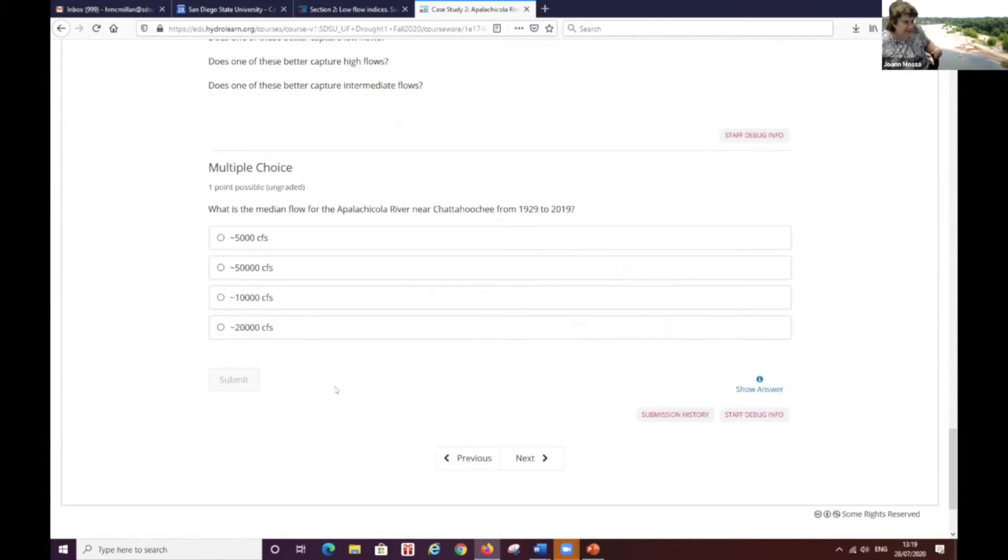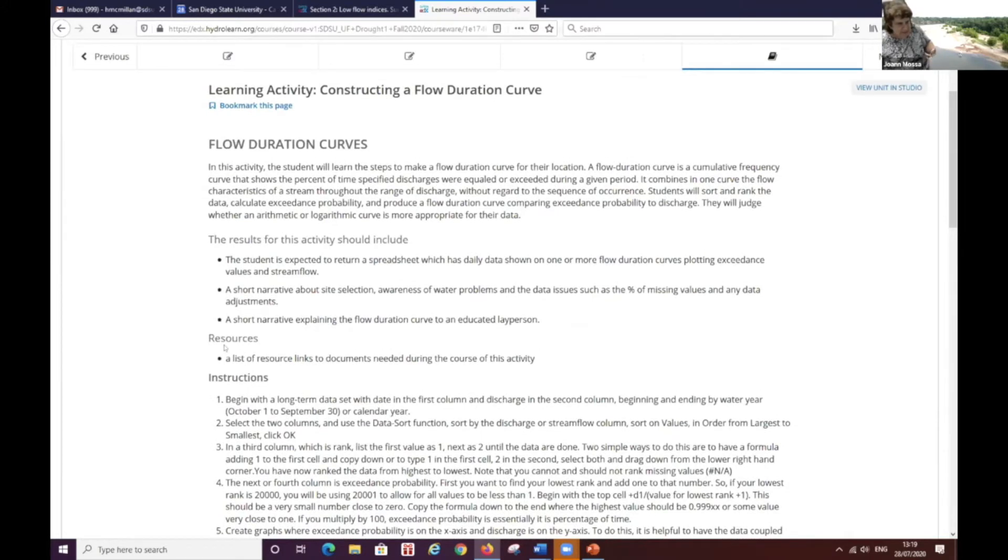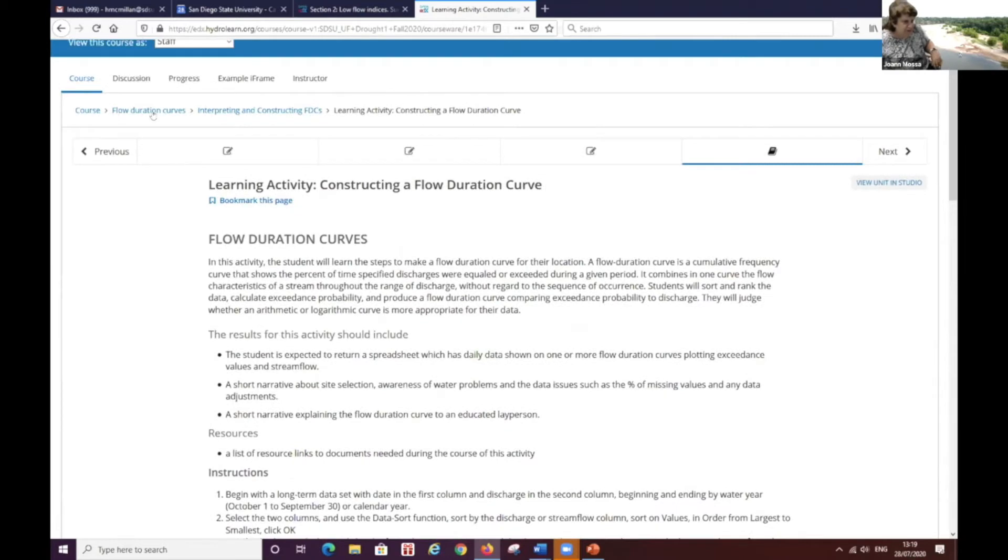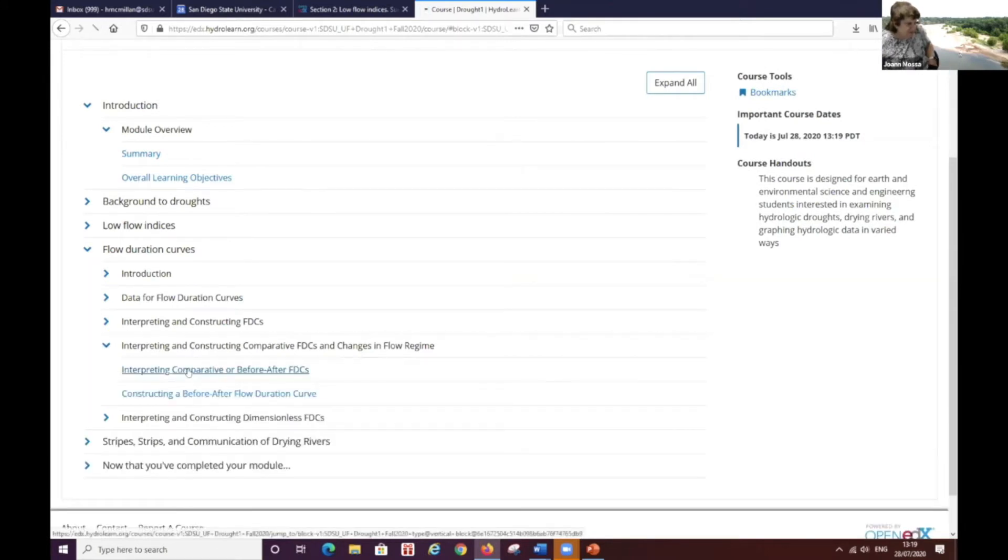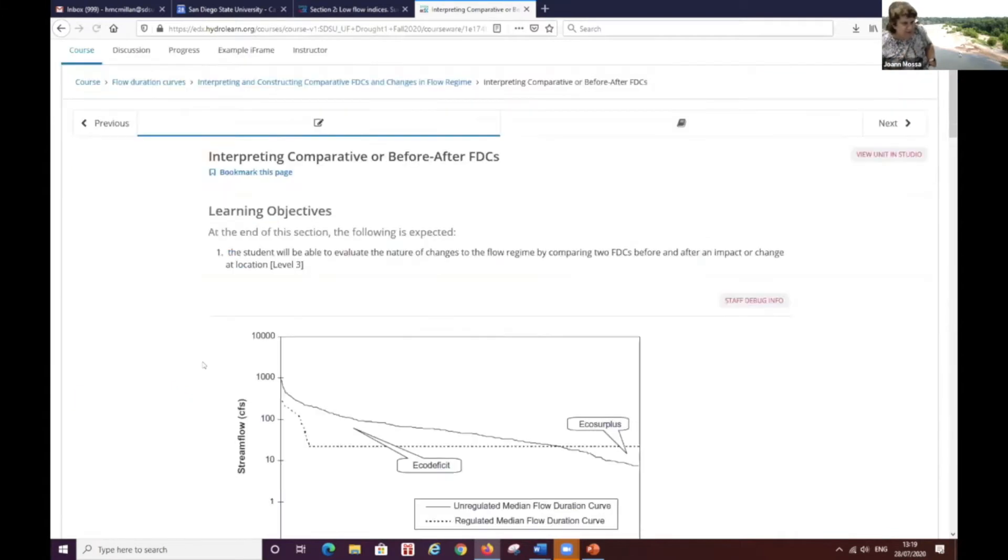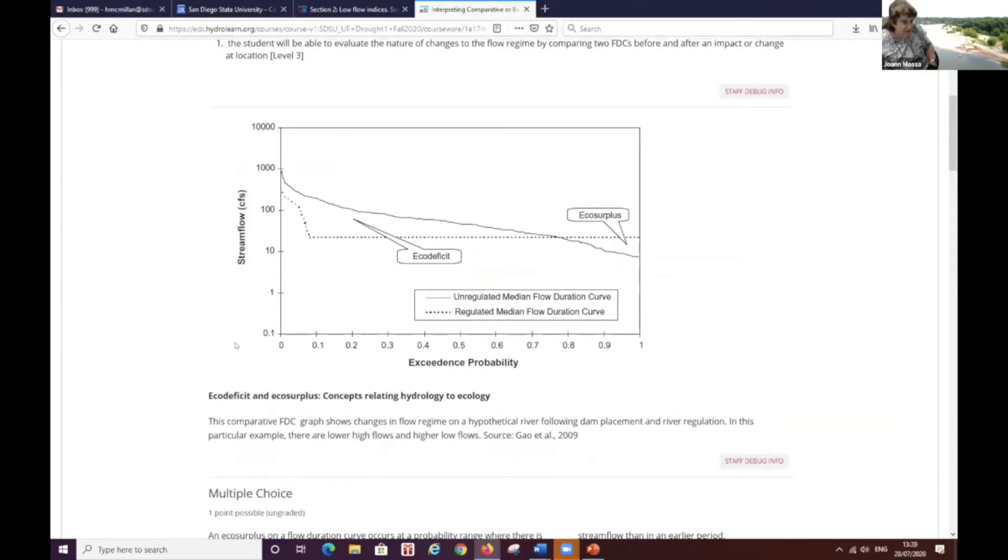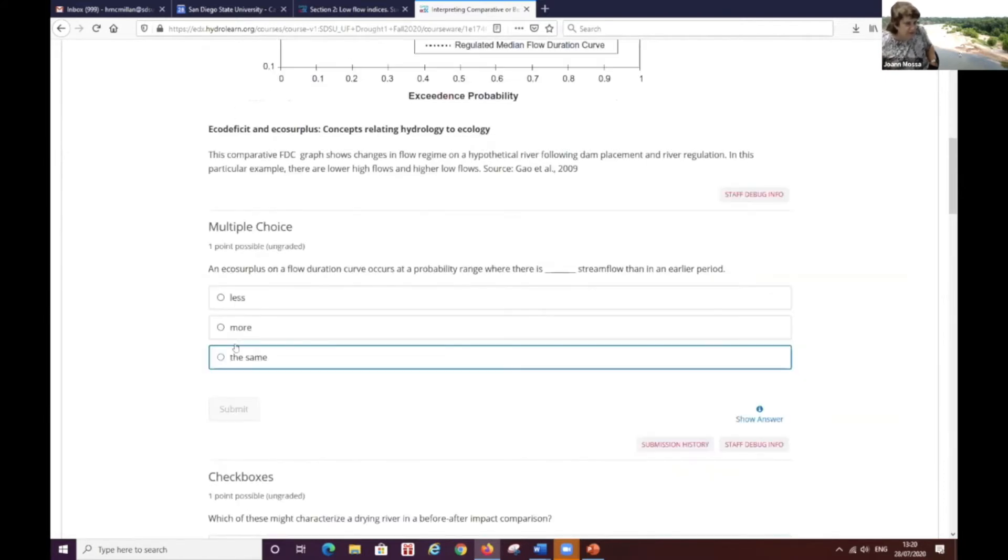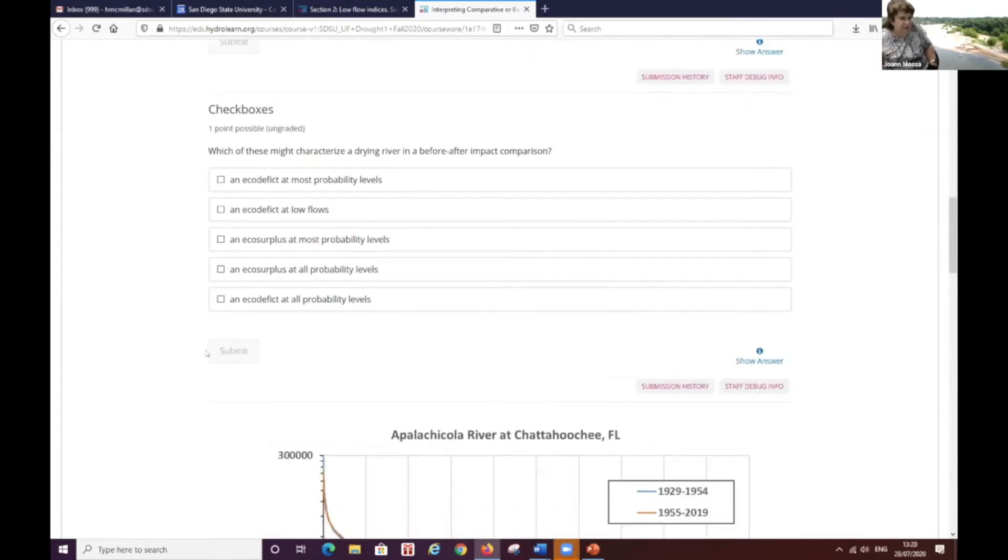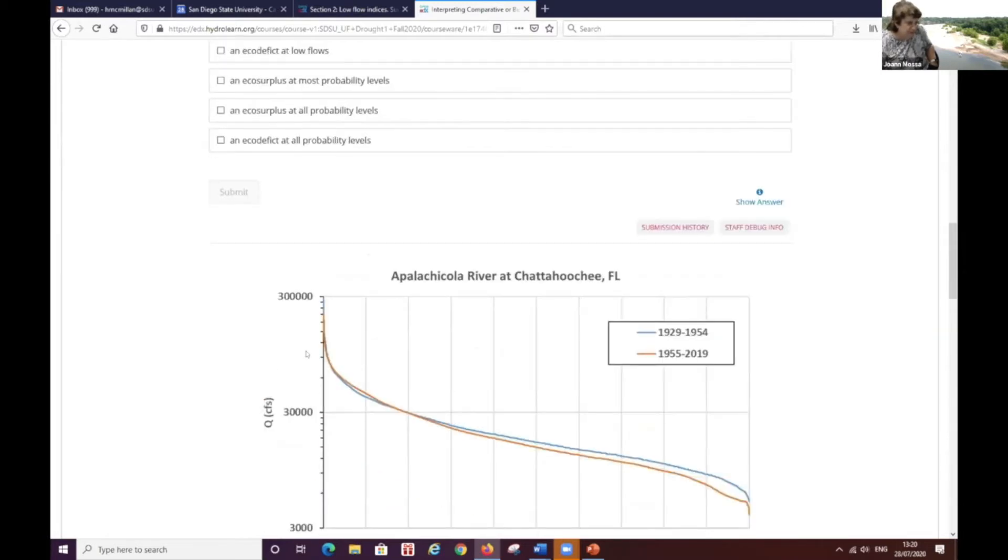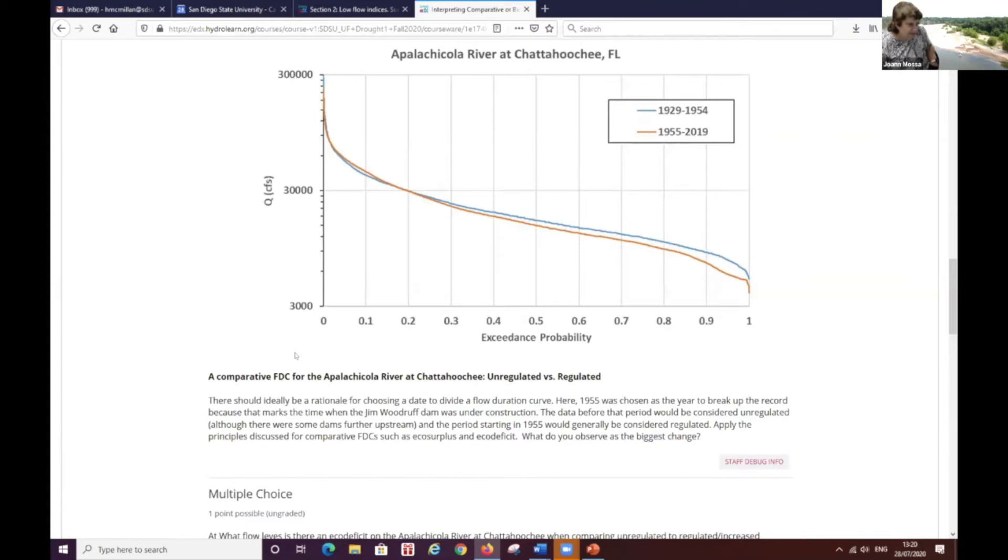And then they actually do a flow duration curve, a dimensionless flow duration curve and a comparative flow duration curve. And let's go to maybe a comparative flow duration curve. Just interpreting, I guess. Yeah, just interpreting, constructing, and then we'll go to constructing too. So in this comparative, I want to present the idea that once the flow regime changes in many cases due to regulation, like putting in a reservoir dam, then you have an echo deficit or echo surplus. And so students will interpret this on the Apalachicola river, where we have a big deficit from before to after for most of this comparative period of time.